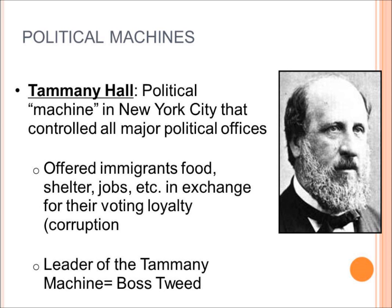Imagine you are an immigrant coming off the boat. All you have to do is vote a certain way and you get food, a place to live, and a job — all given to you just in exchange for a vote. The leader of the Tammany machine was a man named Boss Tweed. During the late 1800s, Boss Tweed was running New York City with his political allies and Tammany Hall, which basically controlled every major political office in New York City.